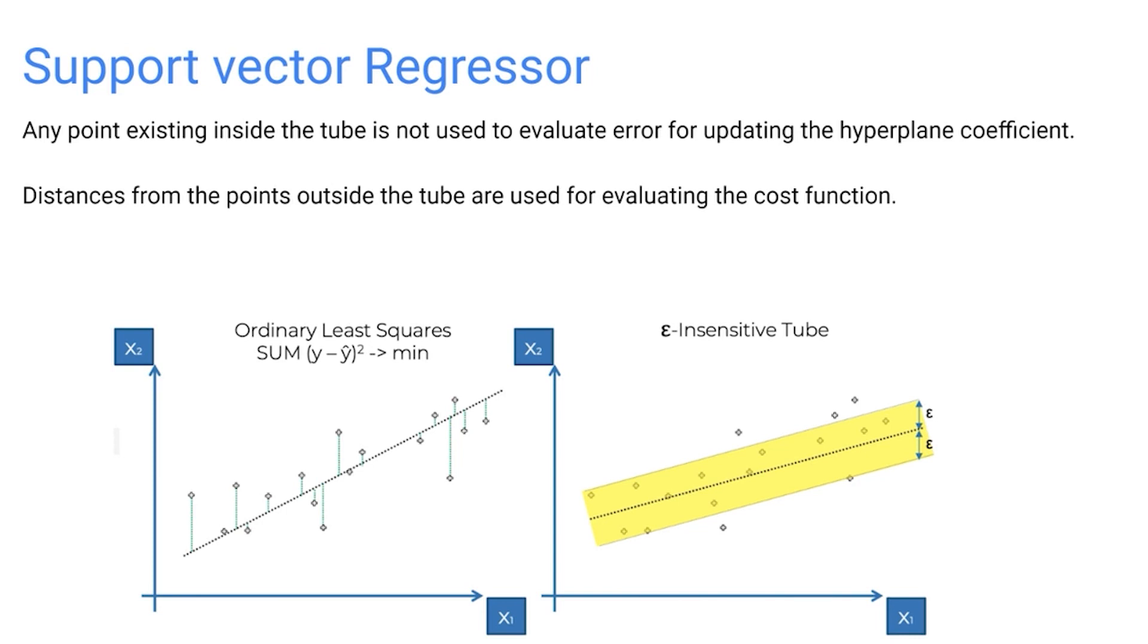We have to do this inverse transformation to get the real value, and it's showing 170K.